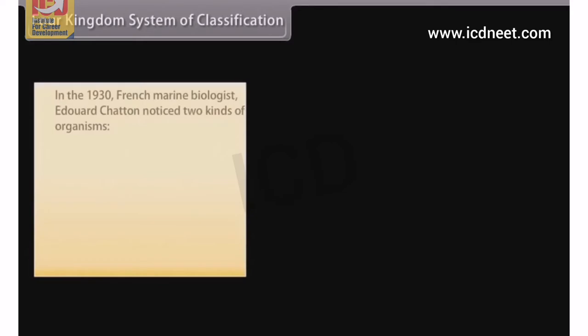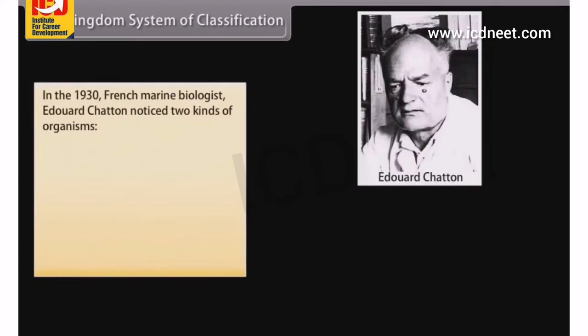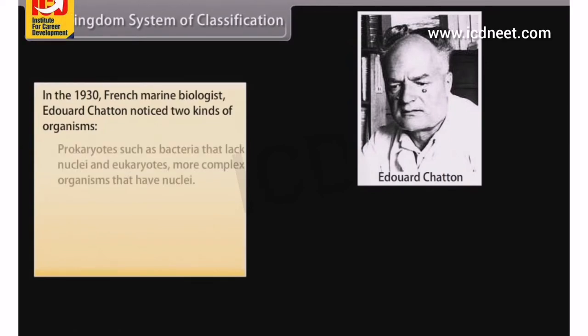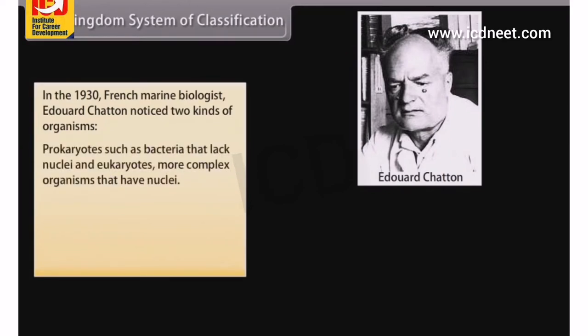The 4 Kingdom System of Classification: in the 1930s, French marine biologist Edward Chatton noticed two kinds of organisms — prokaryotes, such as bacteria, that lack nuclei, and eukaryotes, more complex organisms that have nuclei.